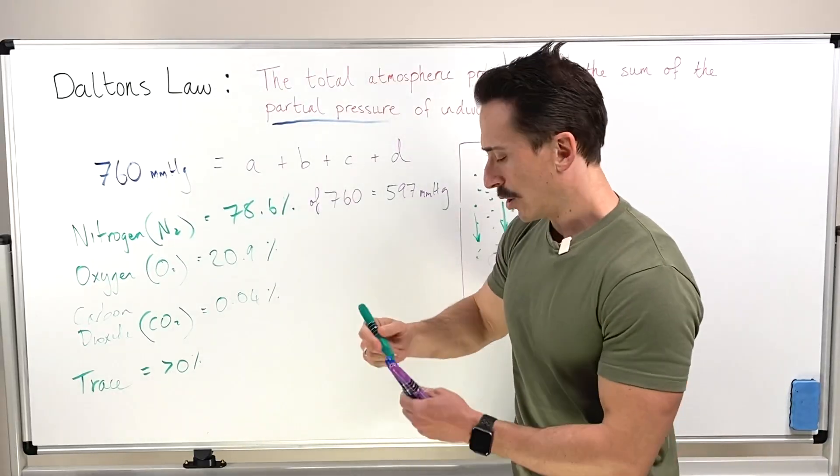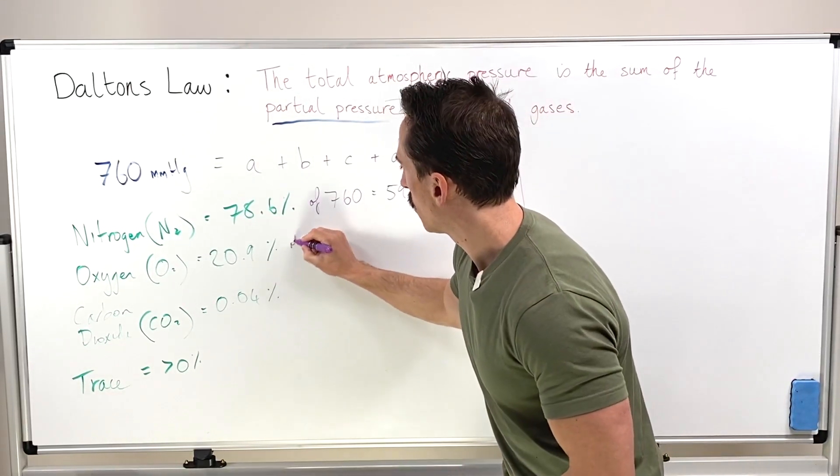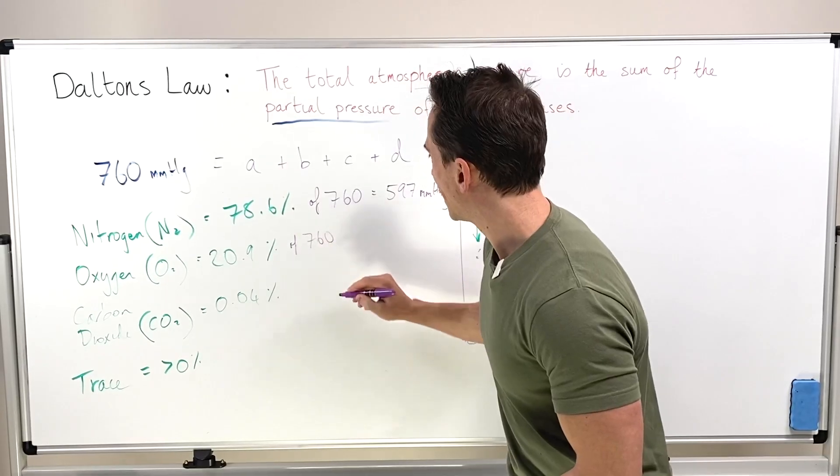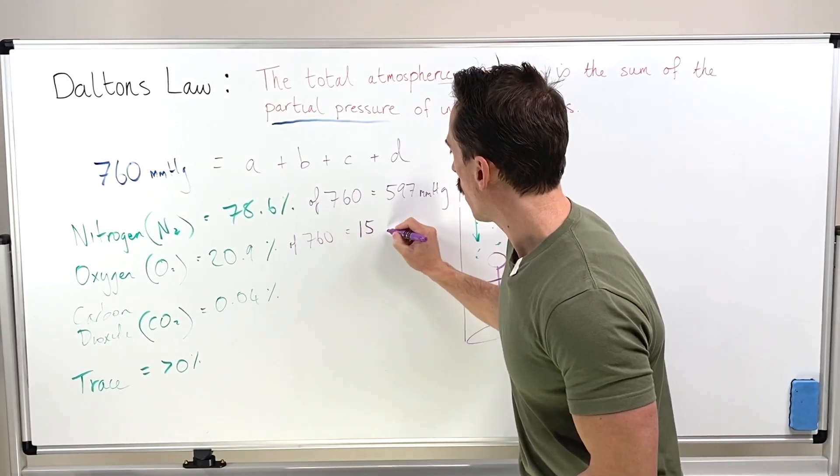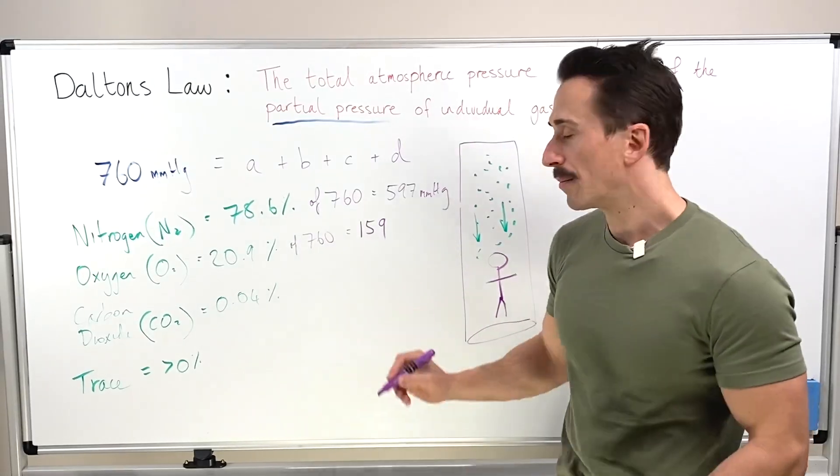For oxygen, 20.9% of 760 is going to be around about 159 millimeters of mercury.